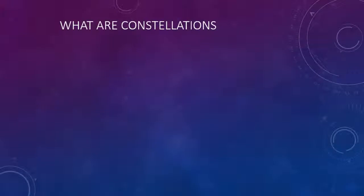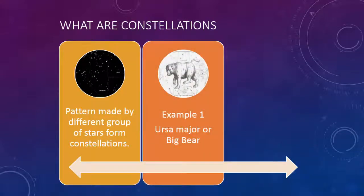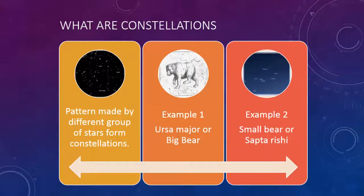What are constellations? Patterns made by different groups of stars form constellations. Example 1: Ursa Major or Big Bear. Example 2: Small Bear.